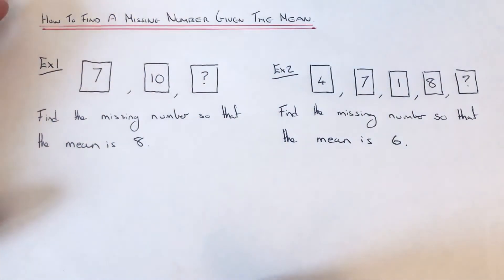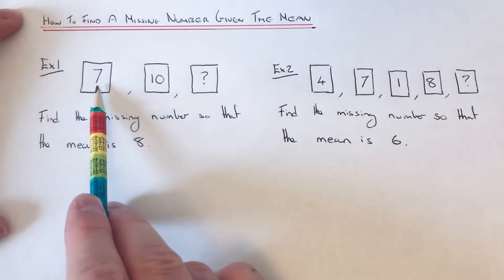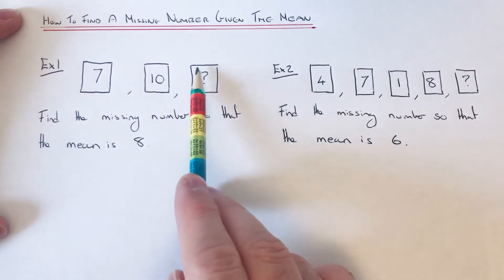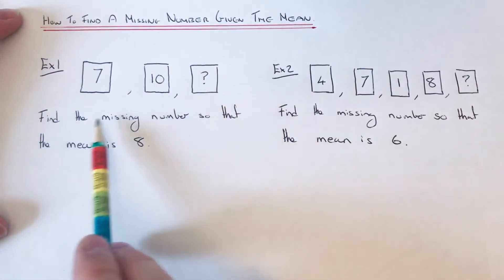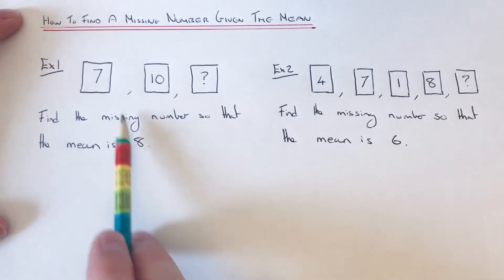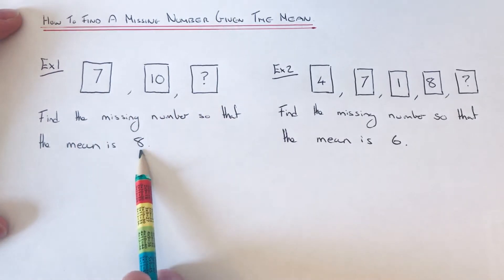So let's have a look at the first example. We've got the number 7 and 10 and we've got one number missing here. We've got to find the missing number so that the mean of the three numbers is 8.